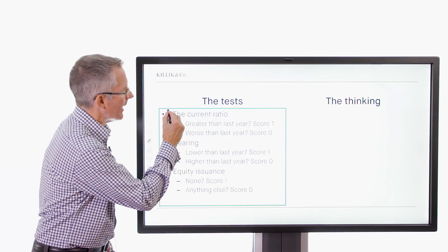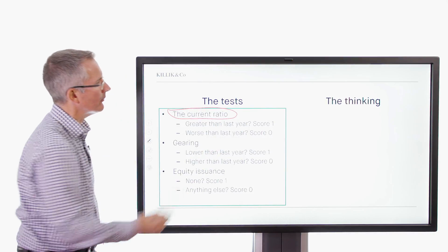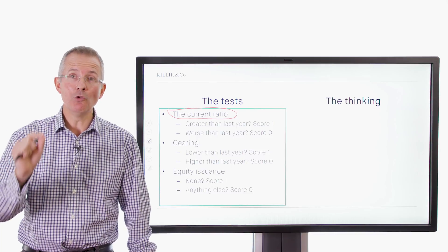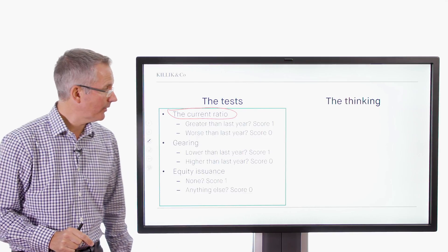Current ratio, first of all, that's the relationship between current assets, short-term assets, and current liabilities. Greater than last year, have another point. Not, have no points.